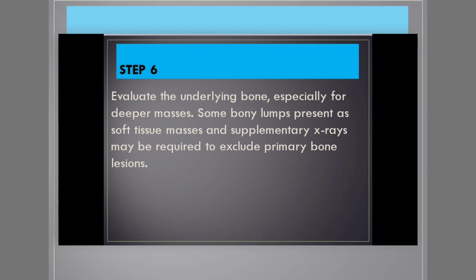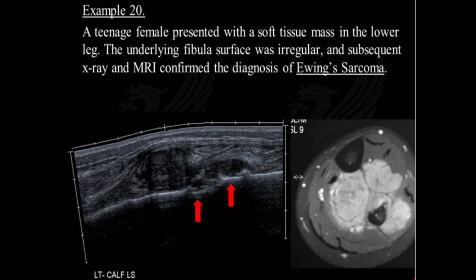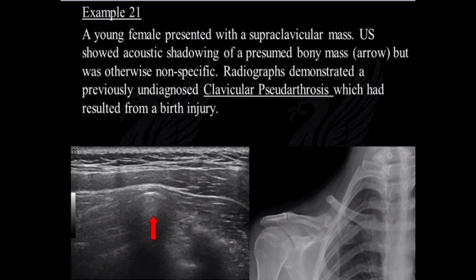Step 6. Evaluate the underlying bone, especially for deeper masses. Some bony lumps present as soft tissue masses and supplementary x-rays may be required to exclude primary bone lesions. Example 20: A teenage female presented with a soft tissue mass in the lower leg. The underlying fibula's surface was irregular, and subsequent x-ray and MRI confirmed the diagnosis of Ewing's sarcoma. Example 21: A young female presented with a supraclavicular mass. Ultrasound showed acoustic shadowing of a presumed bony mass but was otherwise nonspecific. Radiographs demonstrated a previously undiagnosed clavicular pseudarthrosis which had resulted from a birth injury.